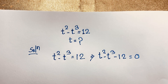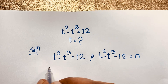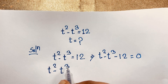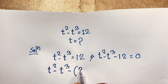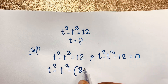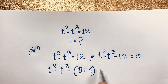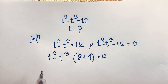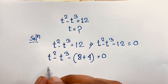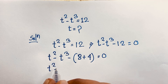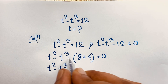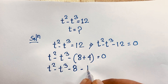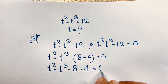Now, you can see that t to the power 2 minus t to the power 3, and this 12 — it will be 8 plus 4, and 8 plus 4 is 12. So it becomes t to the power 2 minus t to the power 3 minus 8 minus 4 is equal to 0.